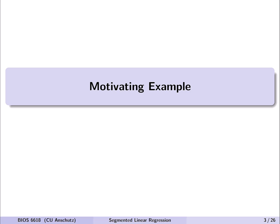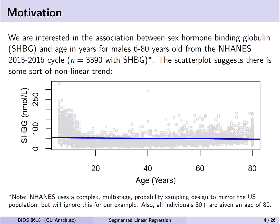Let's start with the motivating example. Assume we're interested in the association between the sex hormone binding globulin, or SHBG, and age in years for males 6 to 80 years old from the National Health and Nutrition Examination Survey, or NHANES, from its 2015 to 2016 cycle, resulting in a large sample size of 3,390 who have this SHBG outcome.